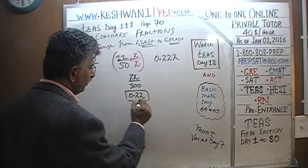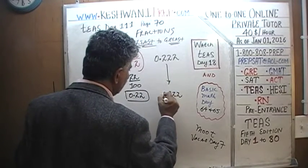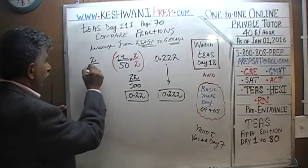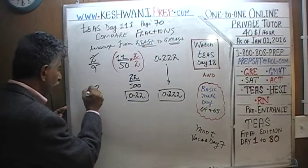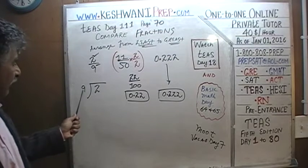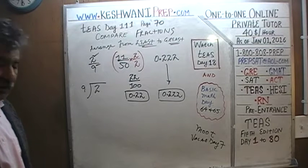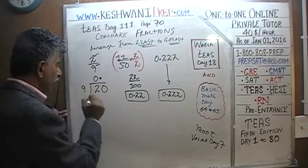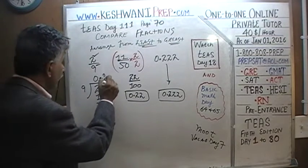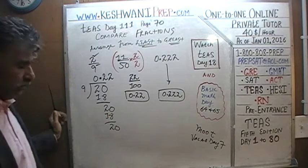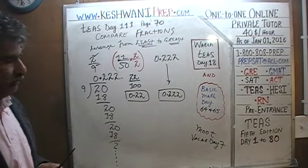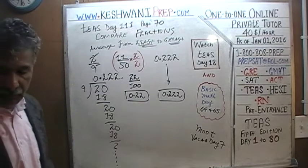For 2/9, we need to do long division. 2 divided by 9: 2 has no nines, so we introduce a decimal and a zero. 20 has two nines — two nines are 18, remainder 2. Introduce another zero: 20 has two nines, eighteen, remainder 2 again. This will go on forever — it never ends. This is 0.2 repeating.